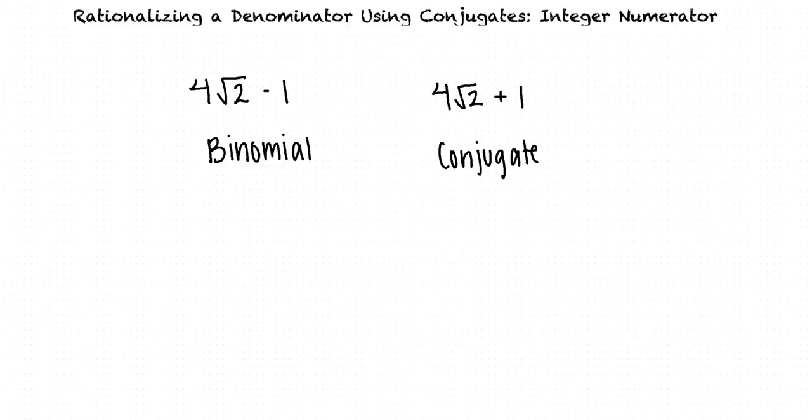Say we have the fraction 5/(4√2 - 1). We can rationalize our denominator by multiplying both the numerator and denominator by the conjugate of the denominator. Earlier, we determined that the conjugate of the binomial 4√2 - 1 is 4√2 + 1.